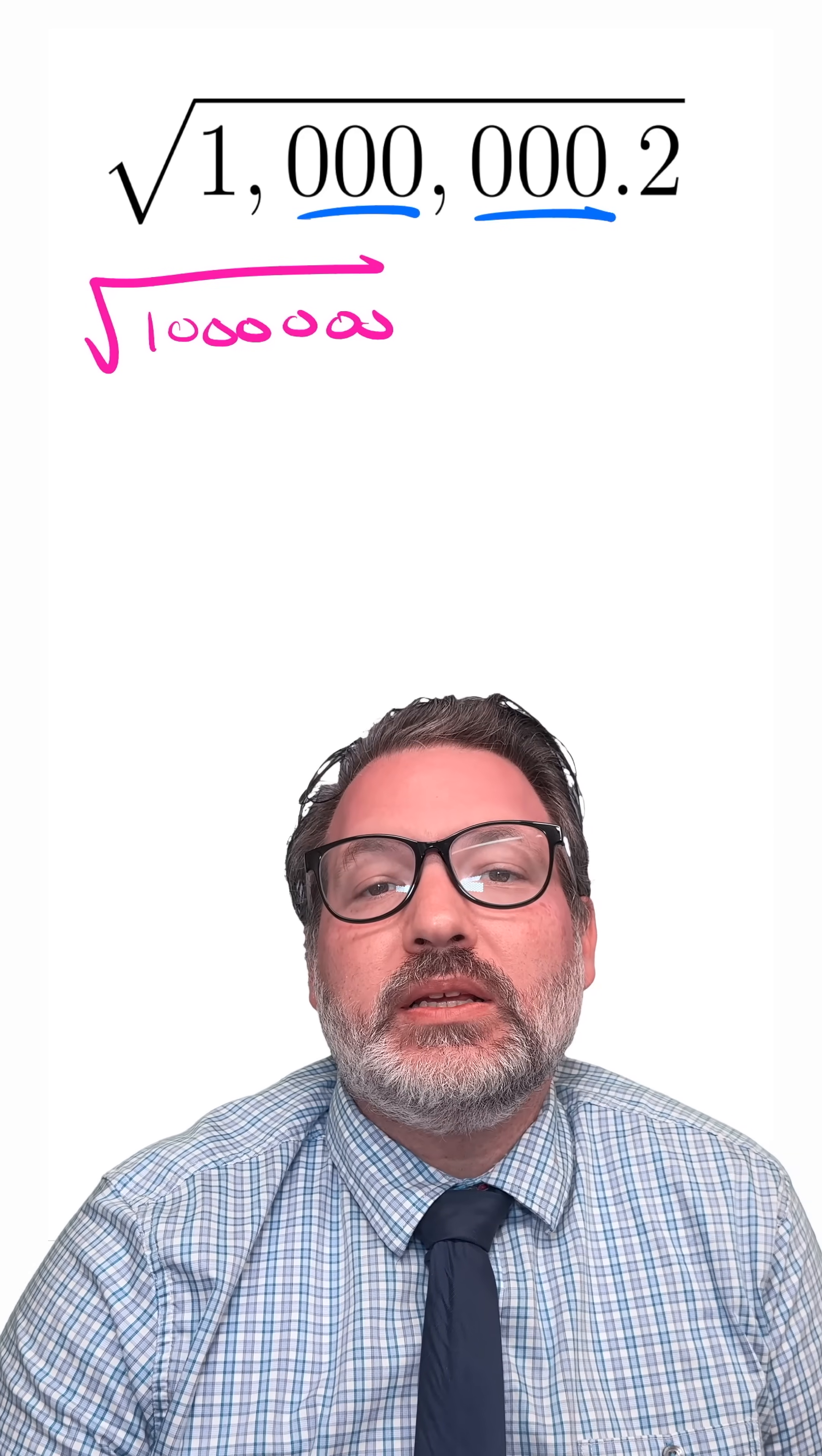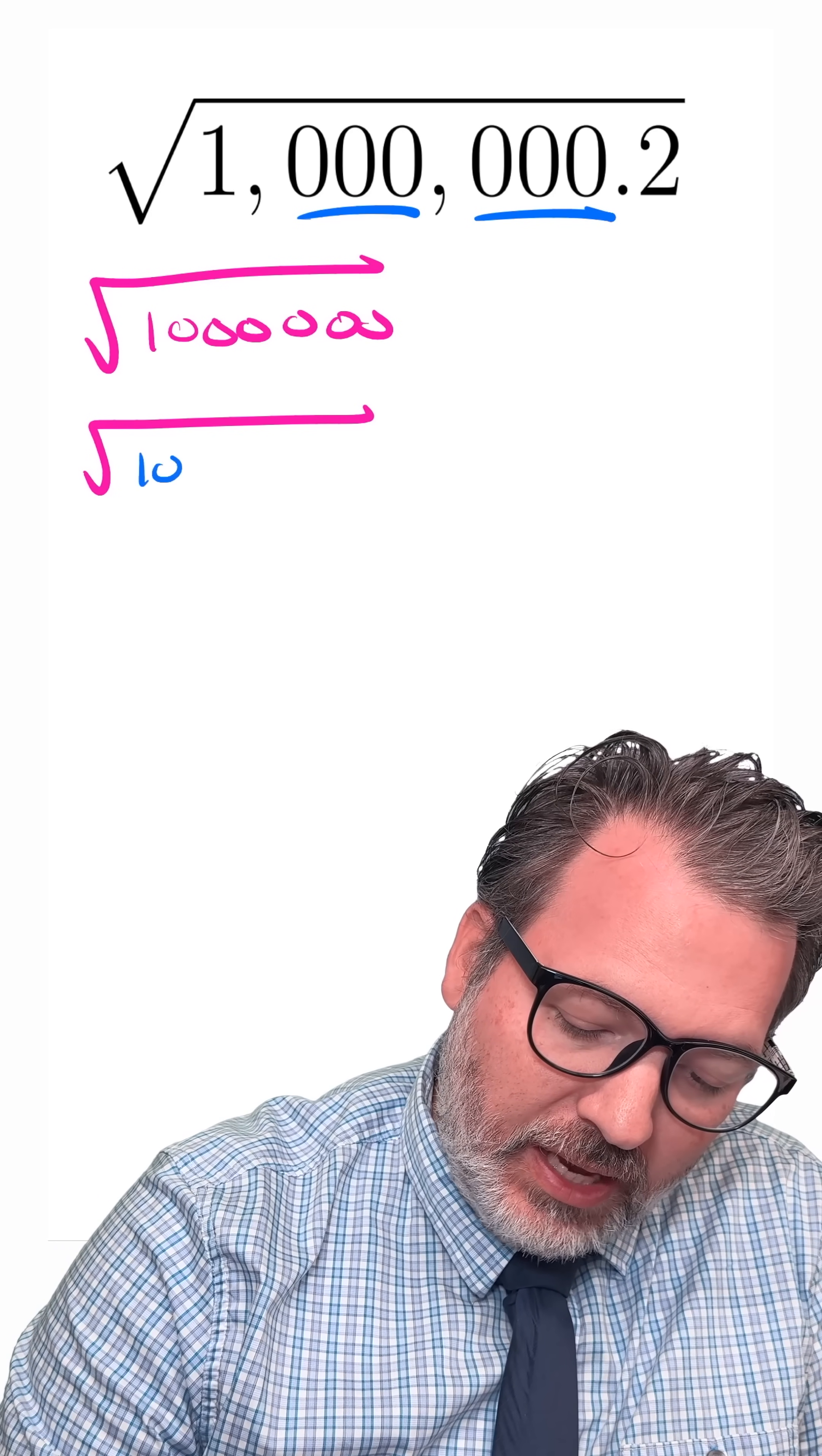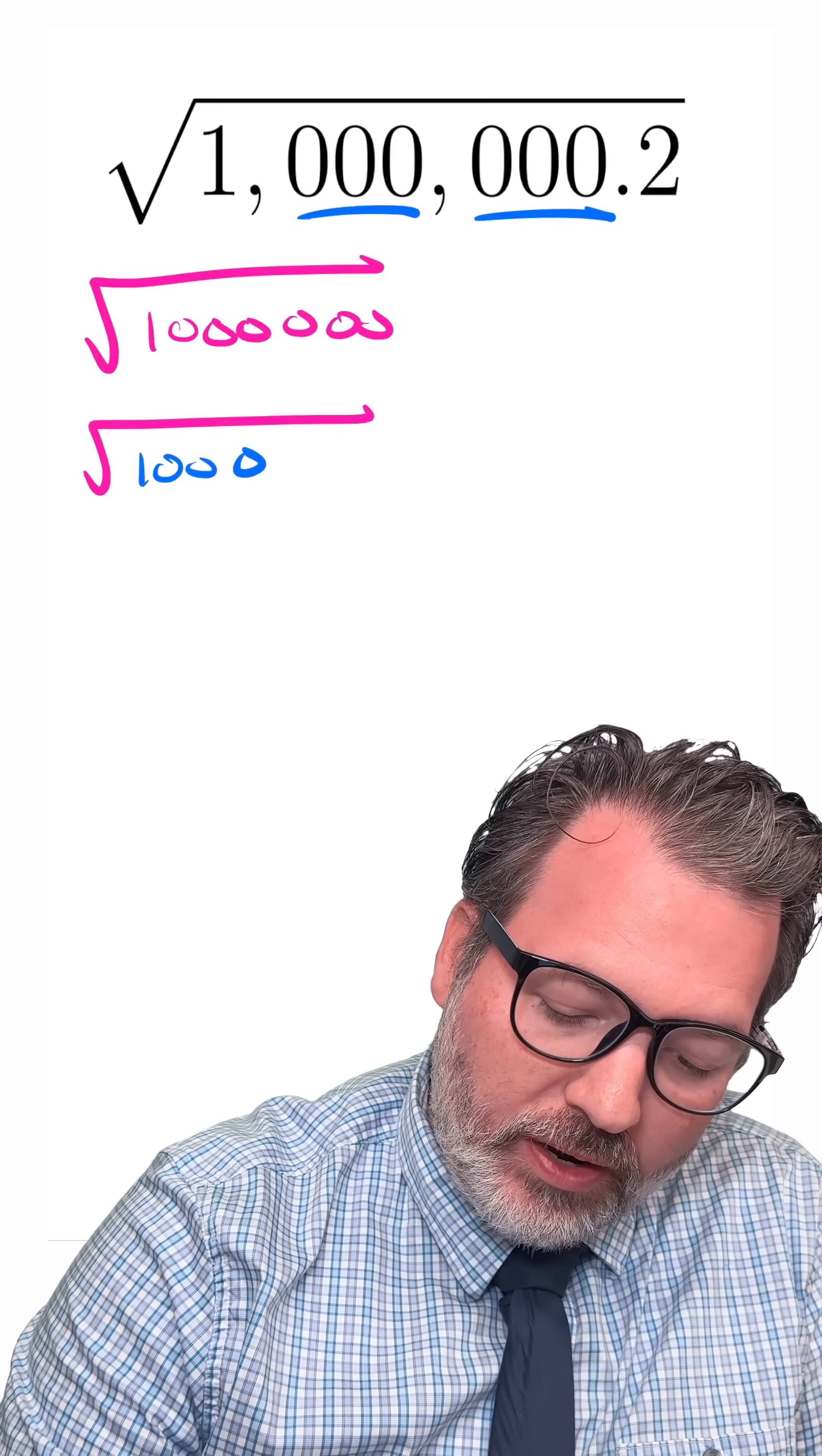I can see these two sets of repeated zeros, three of them, and that actually tells me that 1,000,000 is the same thing as 1,000 squared.